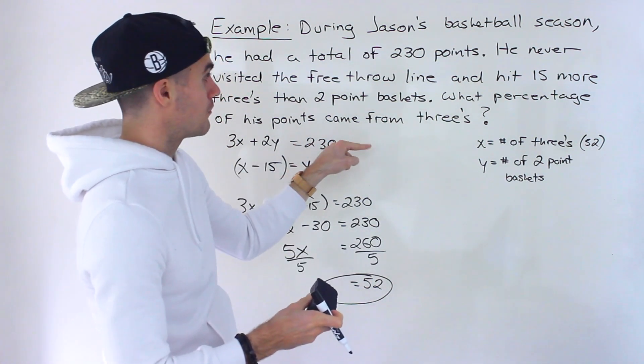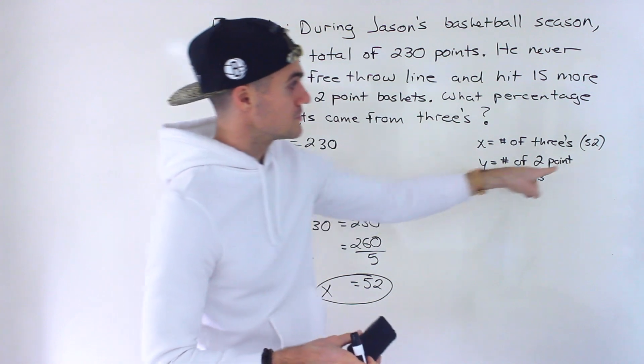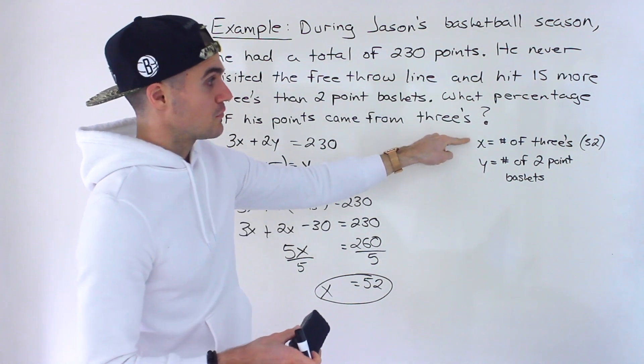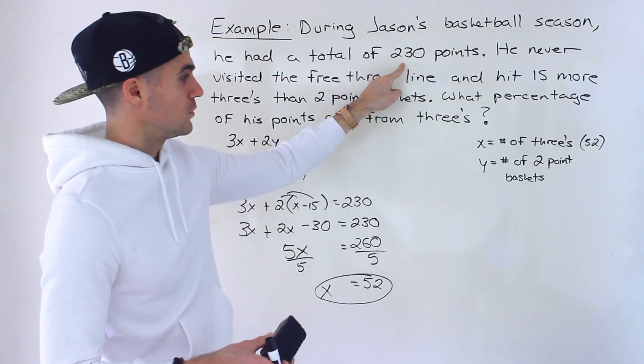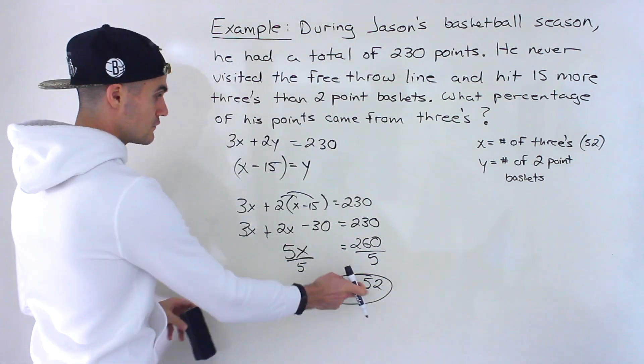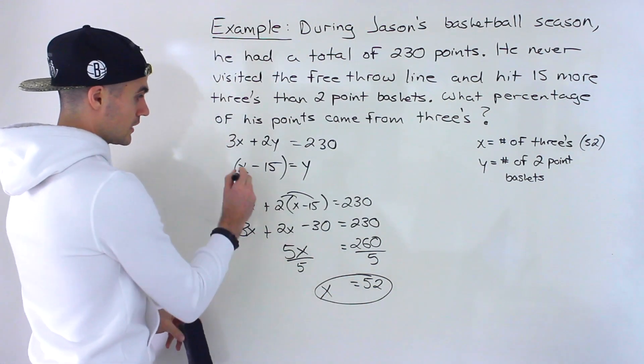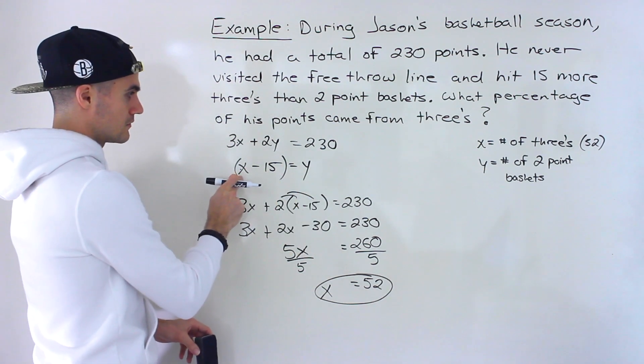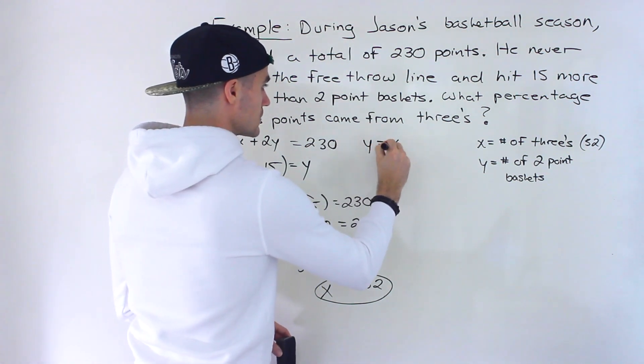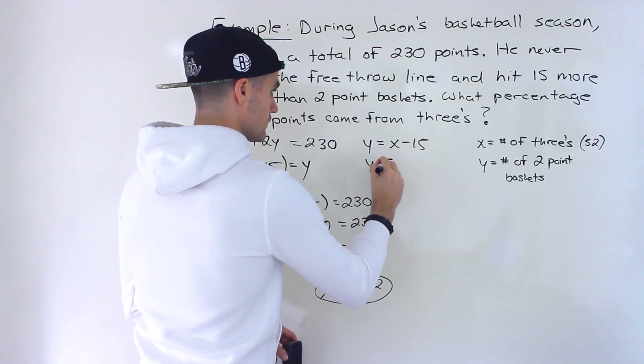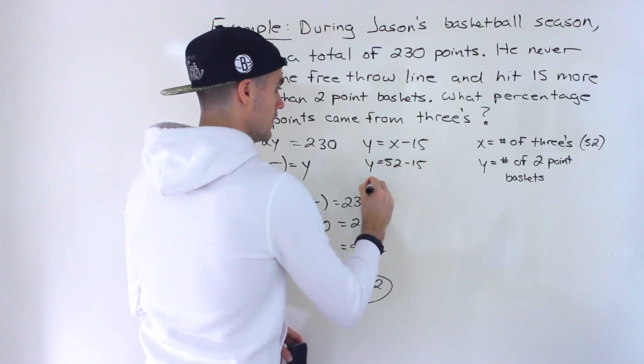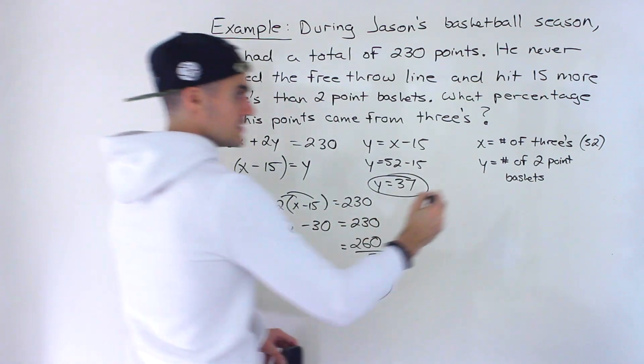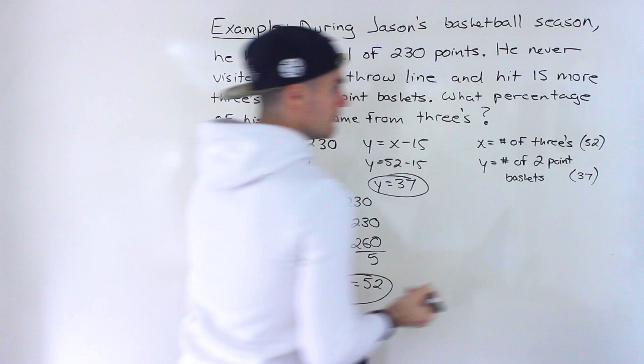But they're just asking what percentage of his points come from threes. So really, all we have to do is take the number, multiply that by three. That's going to be the total number of points that are coming from threes, and then divide it by the total number of points of 230. But I'm going to solve for y as well. You could take the 52, you could plug it in here or you could plug it in here. It doesn't matter. You're going to get the same y value. I'm going to plug it in here. I just feel like there's less going on. So we'll have y equals x minus 15. So y would be 52 minus 15, which would give us 37. So 37 two-point baskets.